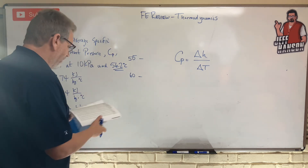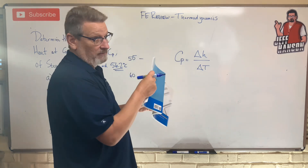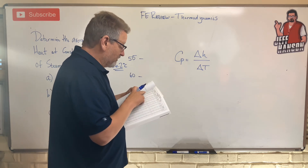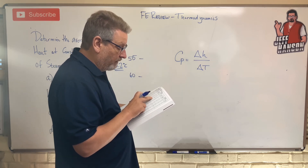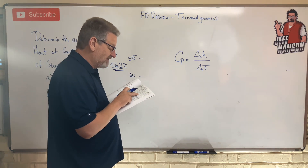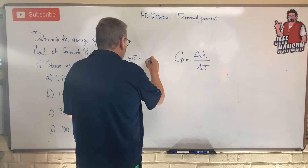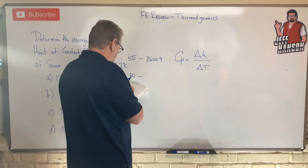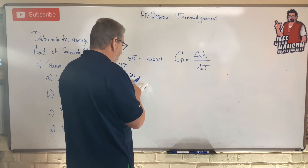I have the steam table open — this is from the reference manual. On the FE exam it will be an online manual. Looking at 55 and 60 degrees in the vapor column — I'm in steam, not liquid. At 55°C the enthalpy value is 2600.9, and at 60°C it is 2609.6.